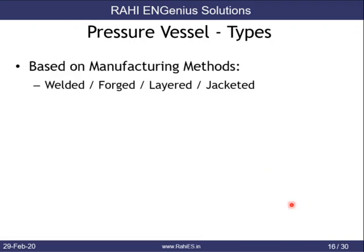Let's define and segregate pressure vessels based on various methods. Based on manufacturing methods, a vessel can be a welded pressure vessel, forged vessel, layered vessel, or jacketed vessel. A layered vessel is one where the total thickness is made up by putting different plates together — for example, a 100mm thick vessel could consist of two 30mm plates and one 40mm plate combined.